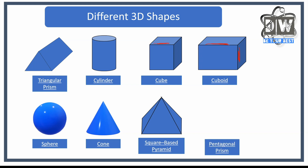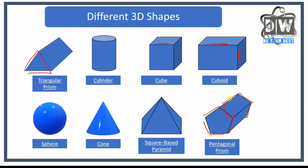Last but not least is a pentagonal prism. We've got a pentagon shape here — just like we had a triangular prism with a triangle, on this one we have a pentagon shape at the front and at the back.